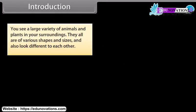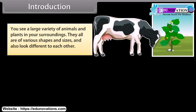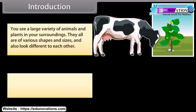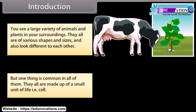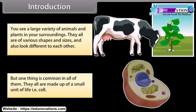You see a large variety of animals and plants in your surroundings. They all are of various shapes and sizes and also look different from each other. But one thing is common in all of them — they all are made up of a small unit of life, that is, the cell. So in this module we are going to learn about cell and its structure.